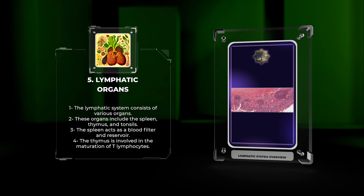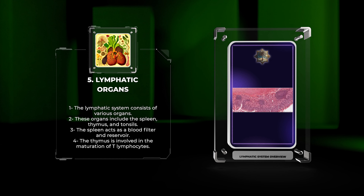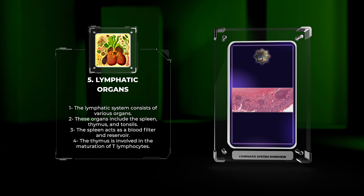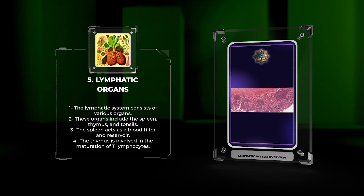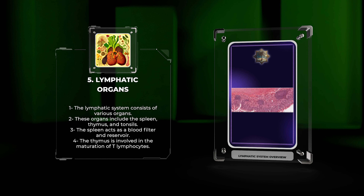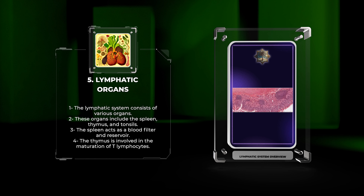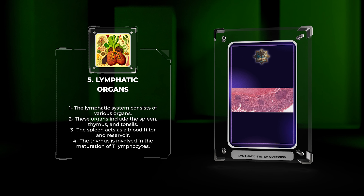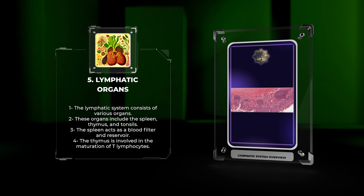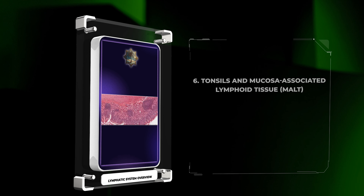Apart from lymph nodes, the lymphatic system consists of various other organs that contribute to immune function, including the spleen, thymus, and tonsils. The spleen acts as a blood filter and reservoir, removing old and damaged red blood cells and initiating immune responses against bloodborne pathogens. The thymus is primarily involved in the maturation of lymphocytes, crucial for cell-mediated immunity. Tonsils, along with the mucosa-associated lymphoid tissue (MALT), are responsible for trapping and eliminating pathogens entering through the respiratory and gastrointestinal tracts.